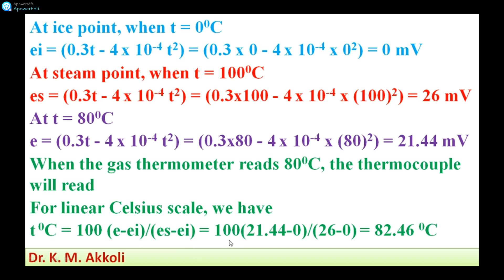Substituting the values: 100 multiplied by (21.44 minus 0) divided by (26 minus 0), we get 82.46 degrees Celsius. So when the gas thermometer reads 80 degrees Celsius, the thermocouple reads 82.46 degrees Celsius.